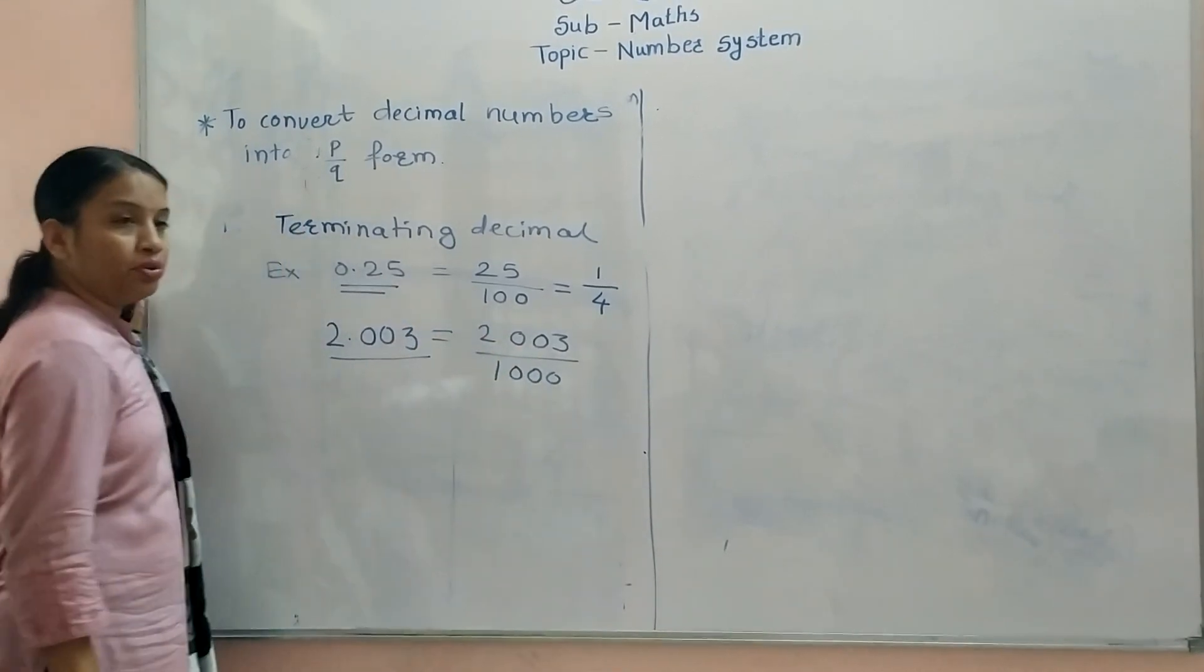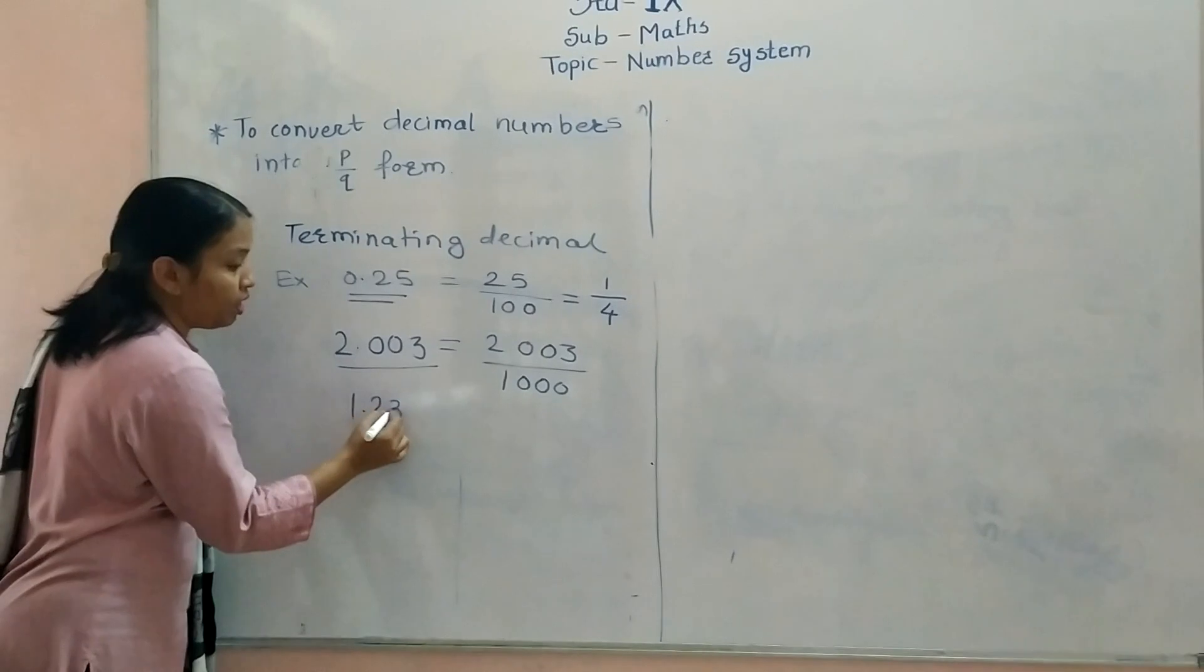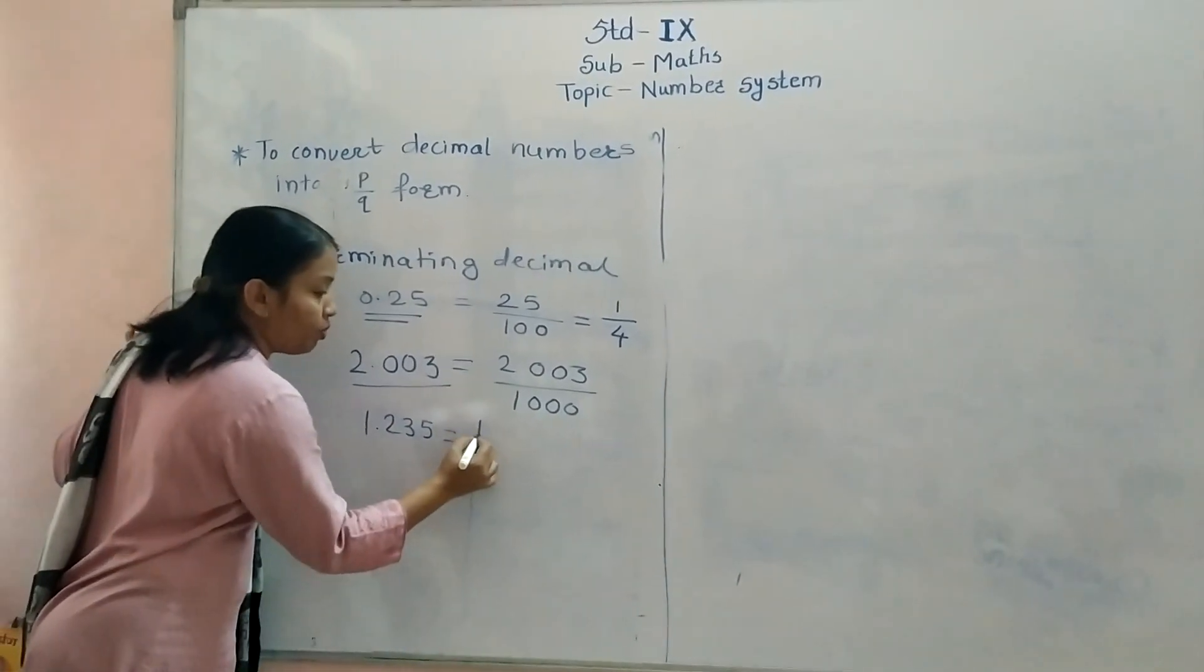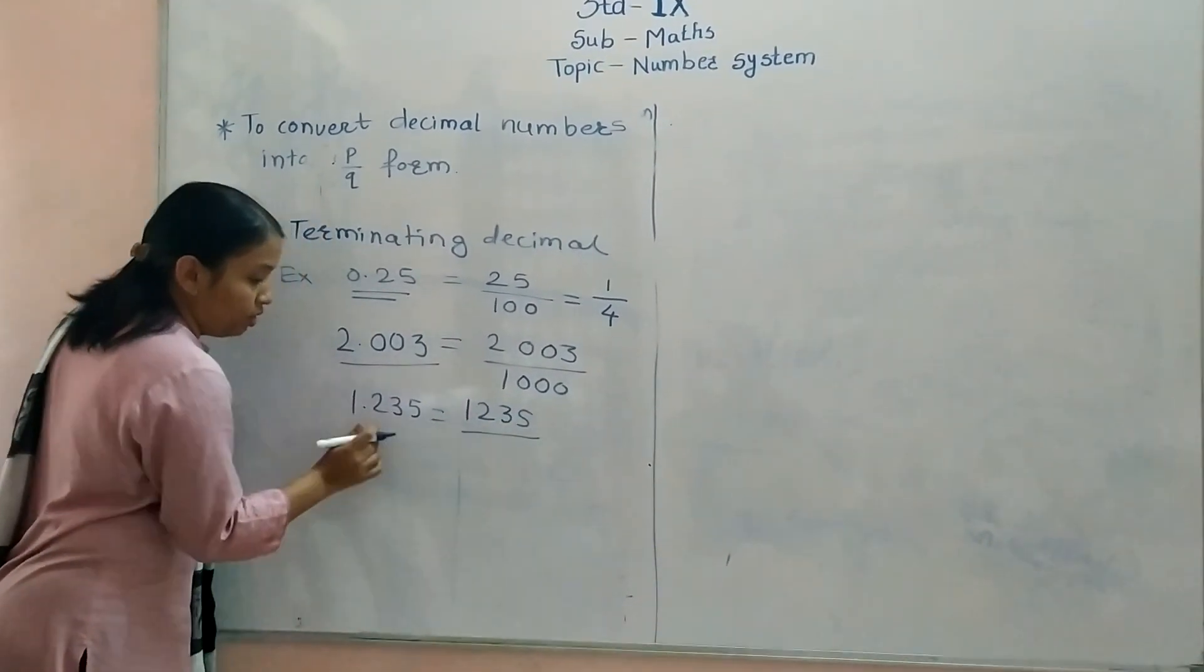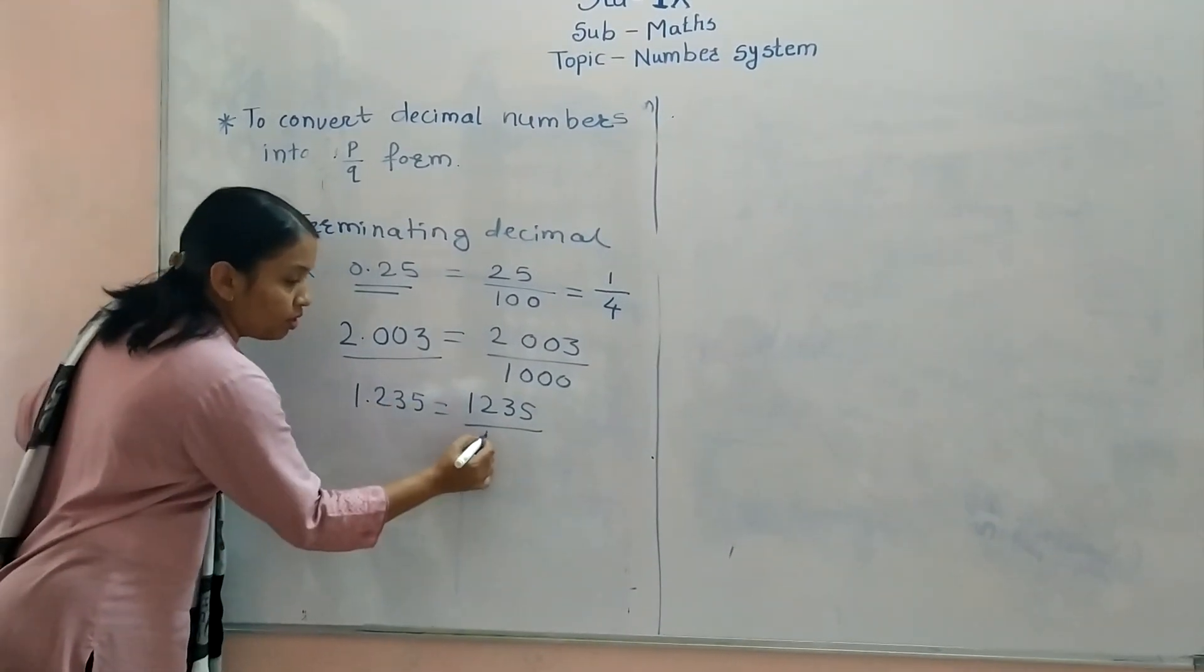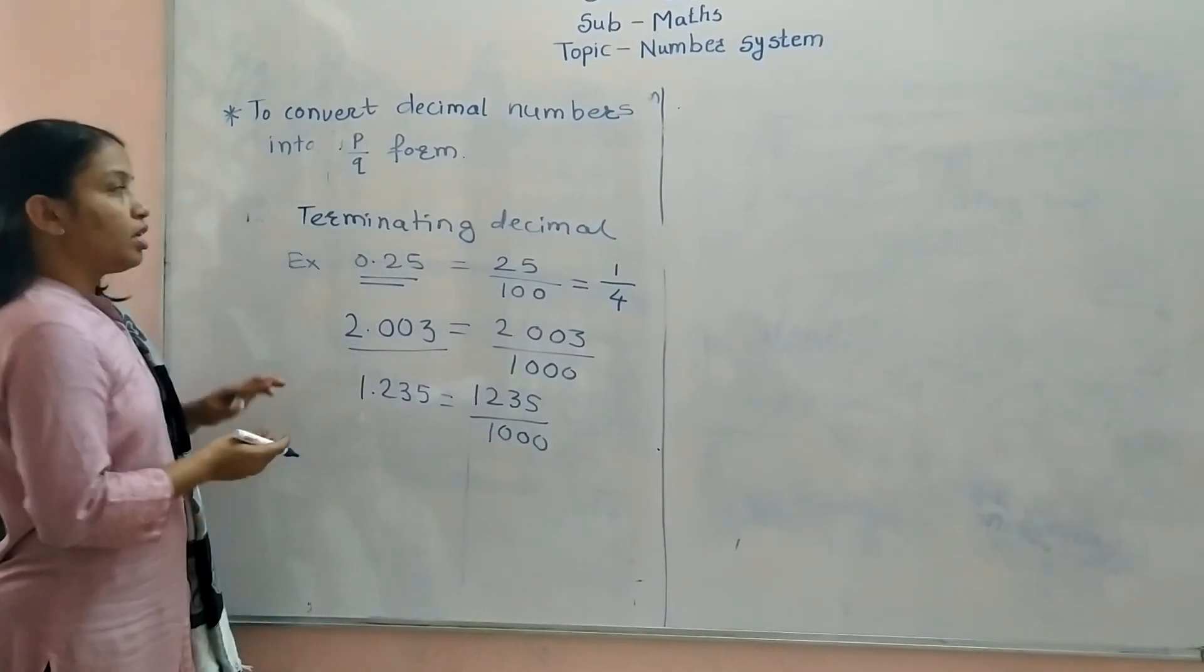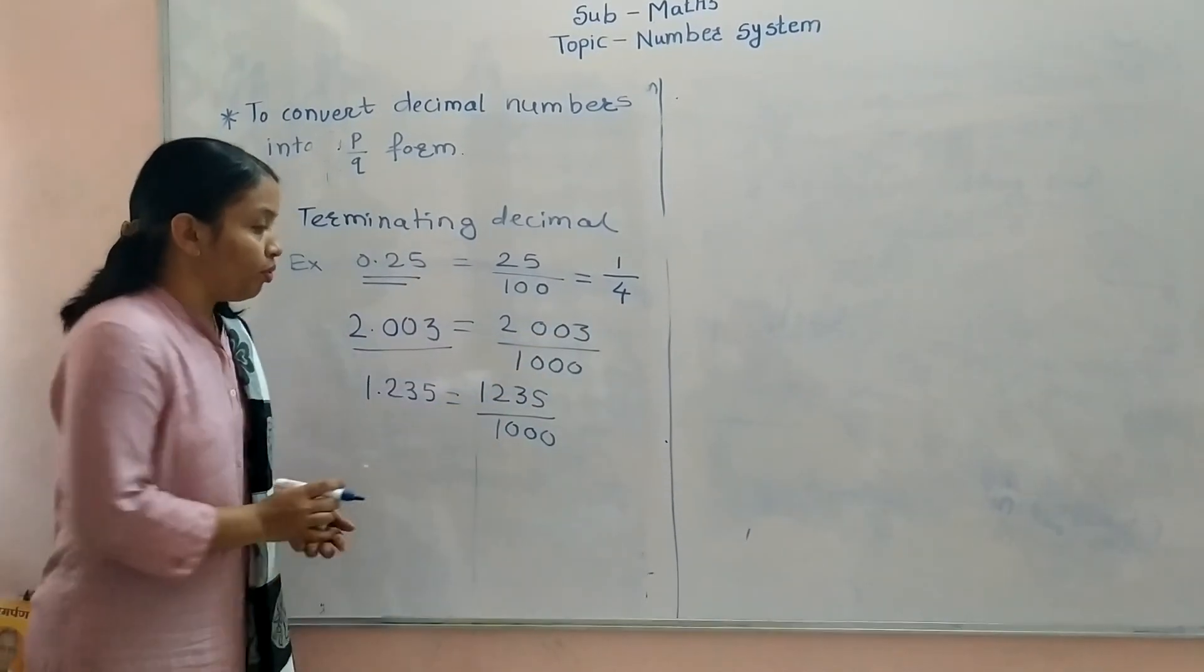Another example, 1.235. You can write it as 1235 upon 1000. This is how to convert the terminating decimal into the P by Q form.